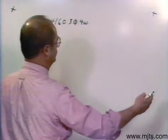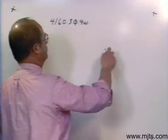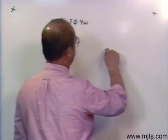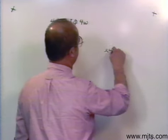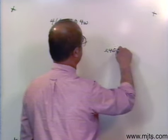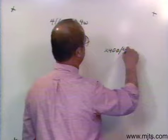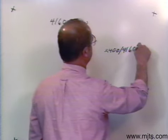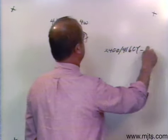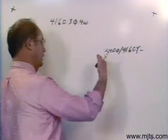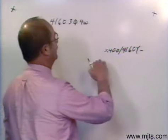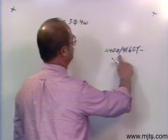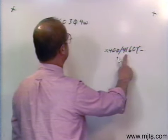Now let's go over here and I'll put a transformer rating. Let's say I have a tub on the high side that's rated 2400 slash 4160.